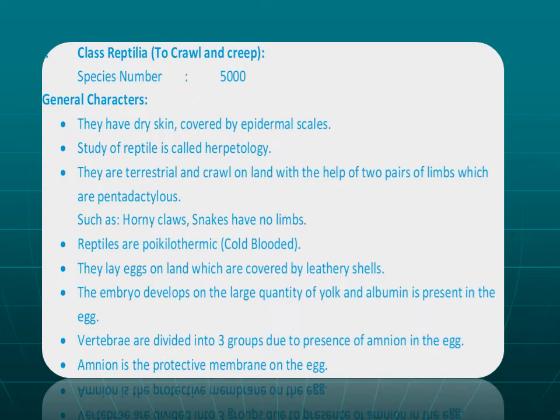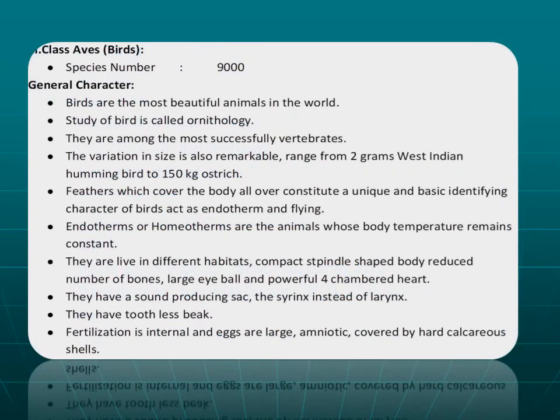Vertebrates are divided into three groups based on the presence of amnion in the egg. The amnion is the protective membrane on the egg. Now let us move to class Aves, also known as birds. There are about 9,000 species of birds found.